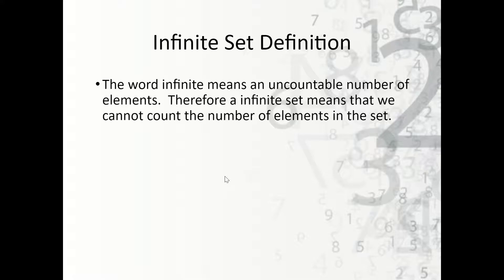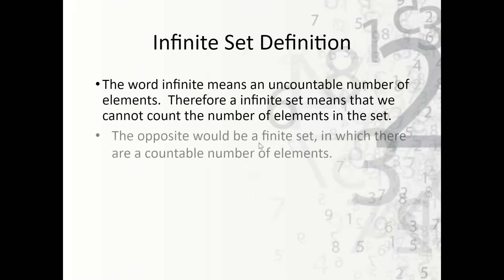Now let's talk about infinite set closure. What does infinite mean? Infinite means an uncountable number of elements — it goes on forever. An example is the natural numbers: we can count 1, 2, 3, 4, 5, ... and no matter what number we stop at, there's always a number past it. Therefore, an infinite set means we cannot count the number of elements. The opposite is a finite set with a countable number of elements — for example, natural numbers between 1 and 10 stops at 10 and is finite.